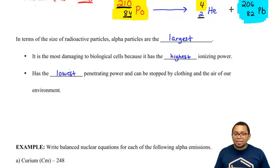Our clothes, even the air around us, provides protection against alpha particles getting into our bodies.